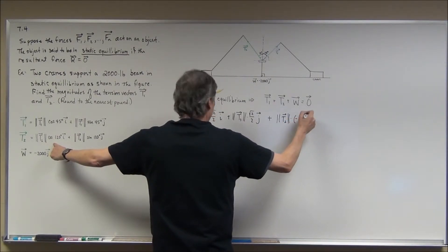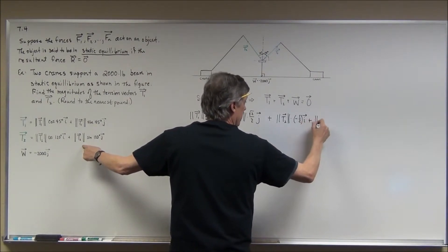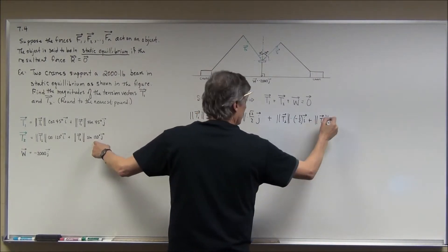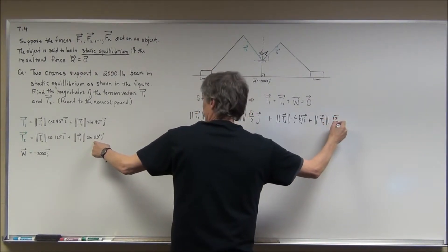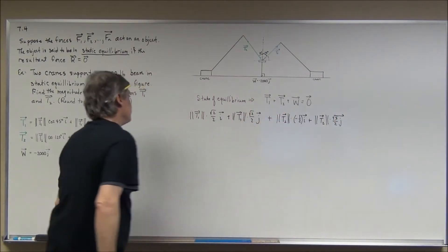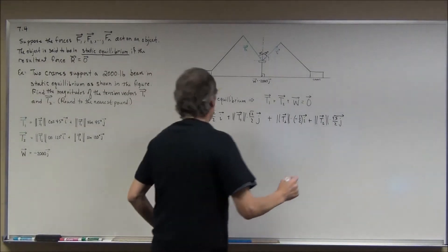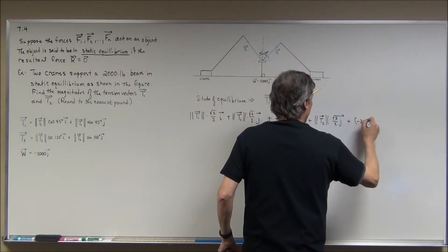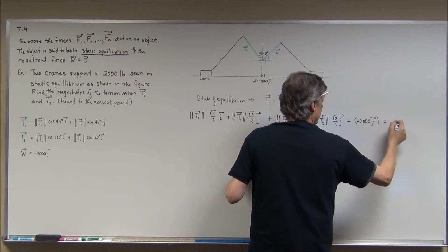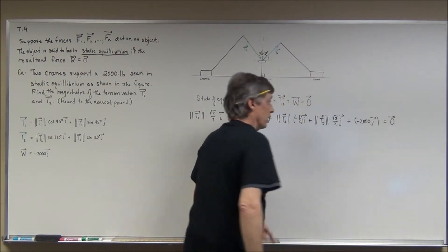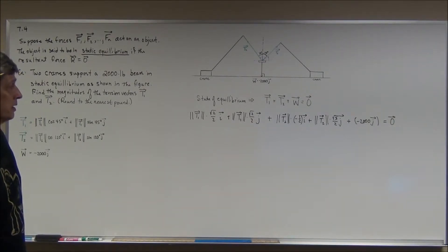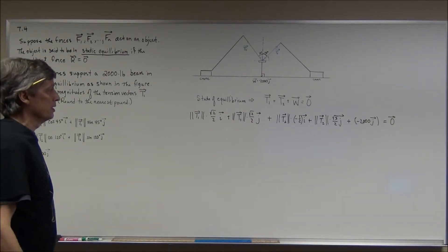Plus the magnitude again times the square root of 3 over 2 times vector j. Then I add vector W, which is negative 2,000 times vector j, and this equals the zero vector. The zero vector has magnitude zero, so it's like zero times i and zero times j.